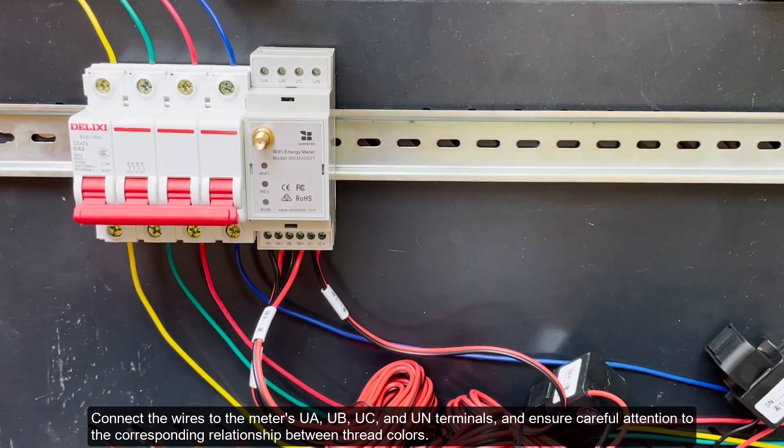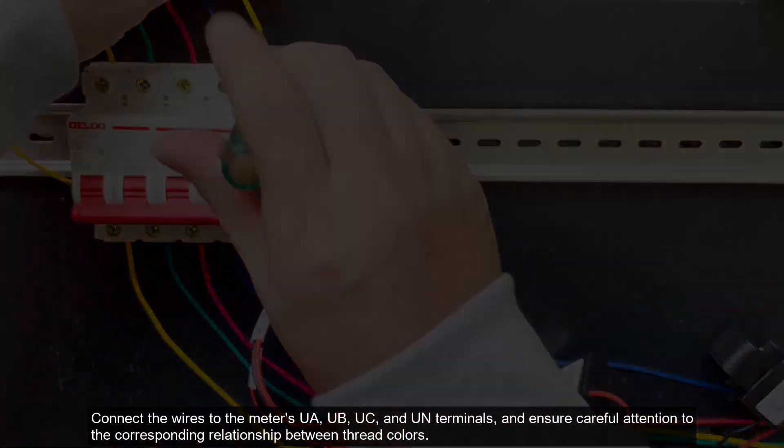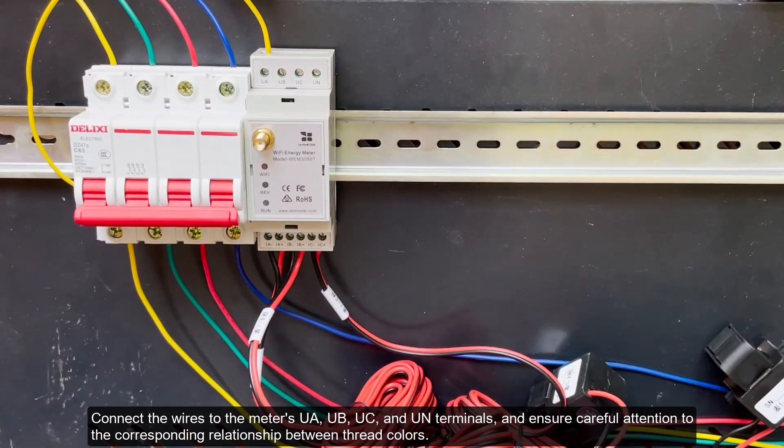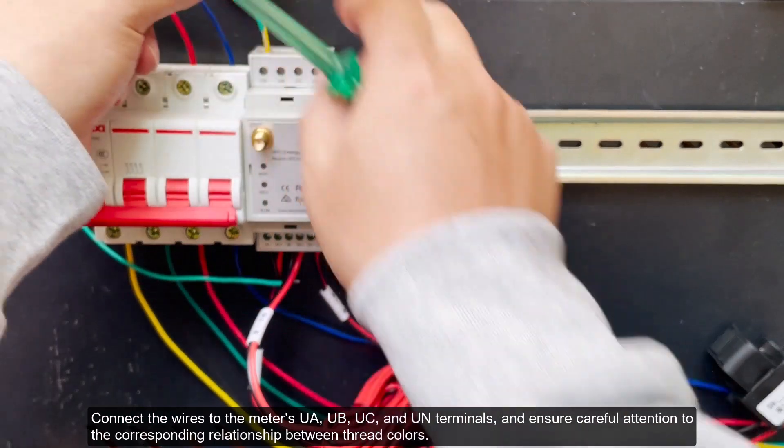Connect the wires to the meter's UA, UB, UC, and UN terminals and ensure careful attention to the corresponding relationship between thread colors.